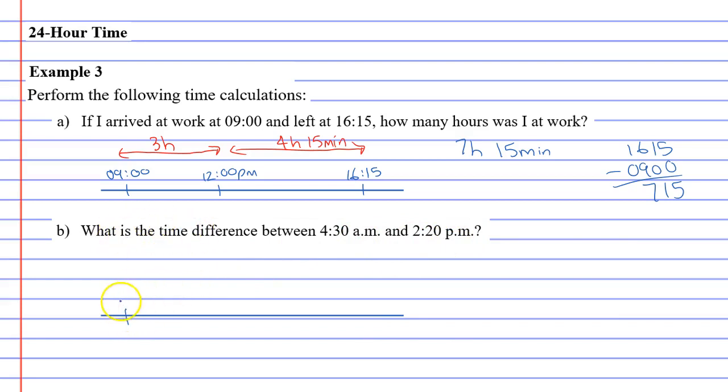So we're finding the difference between 4:30 a.m. and 2:20 p.m. So we'll write 4:30 a.m. and 2:20 p.m. on the right. And we've got to look for the 12 o'clock. So the 12 o'clock is about here. It'll be 12 p.m., 12 noon.